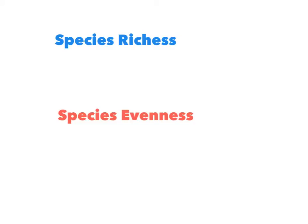The first is called species richness, and the second is species evenness. Species richness is just simply the number of species in a given area.